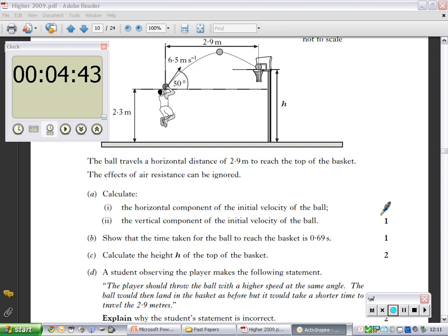Show that the time taken for the ball to reach the basket is 0.69 seconds. The total time taken is going to be the same in horizontal and in vertical. You're in the air for the same amount of time in the vertical direction as you are in the horizontal direction. Which one do you have more information on? Horizontal. You now know U, you now know these two because you just calculated them. With vertical you only know U and A. With horizontal you have three things. You should be able to calculate time fairly easily.